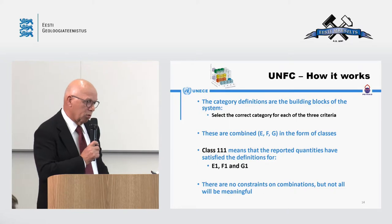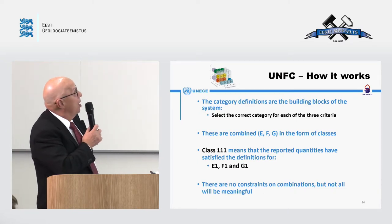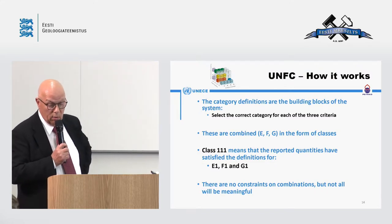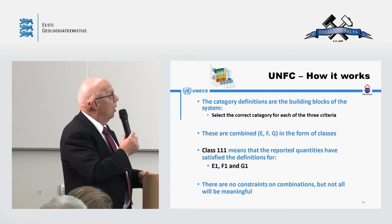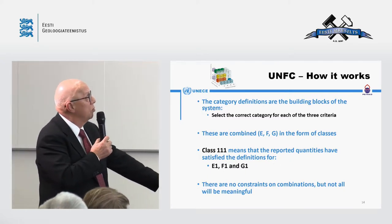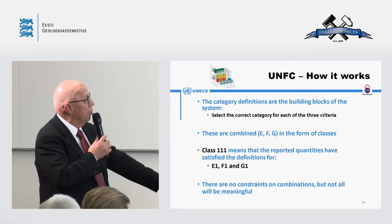Now we put it all together. The category definitions are the building blocks of the system. The challenge is to select the correct category for each of the three criteria, and then combine them in the order E, F, G to get a class. Class 1-1-1 means it satisfies E1, F1, and G1. There are no constraints on combinations, though not all of them are meaningful.